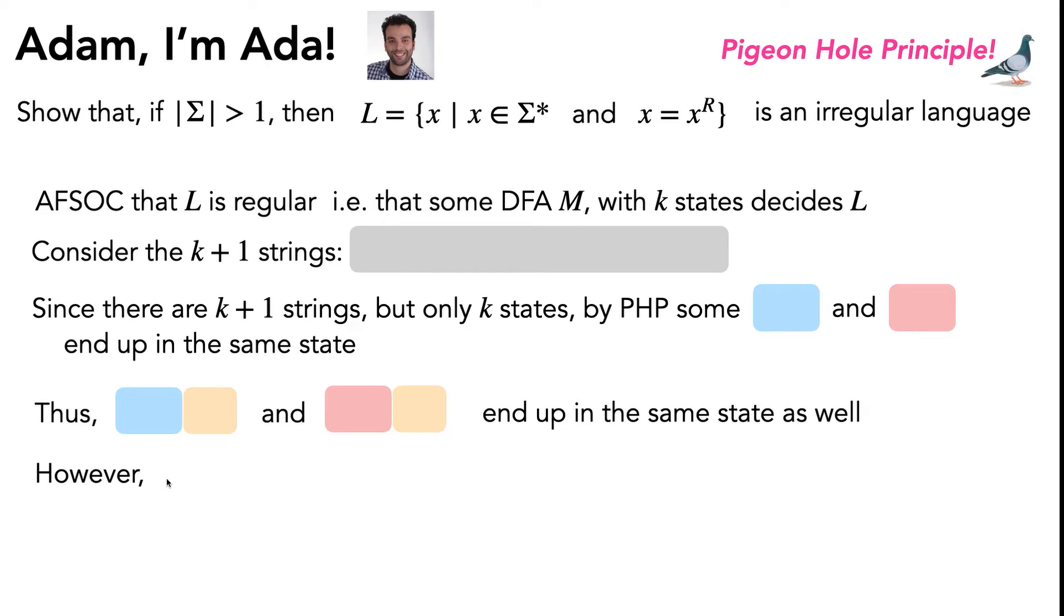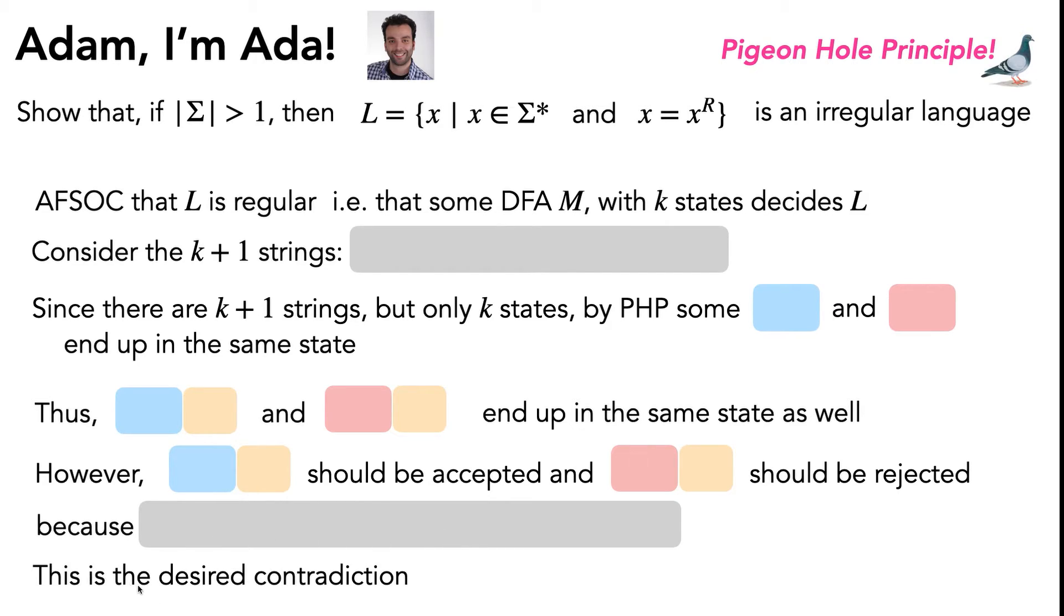However, hopefully you've picked your blue string, your red string, and your augmentation part in such a smart way such that the blue augmented string actually ends up being accepted and the red augmented string actually ends up being rejected. And then you should explain why this is the case. And this gives you your desired contradiction.